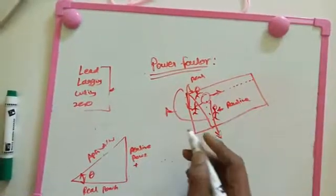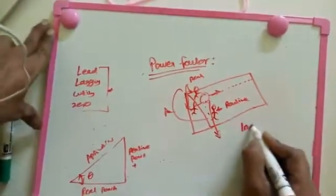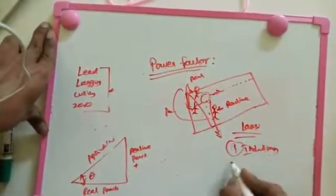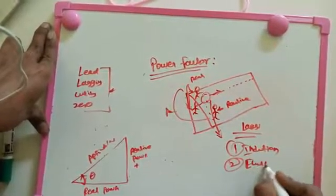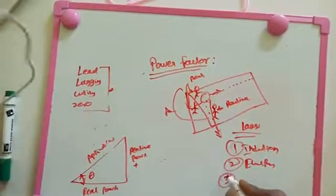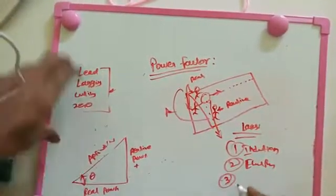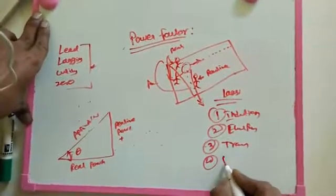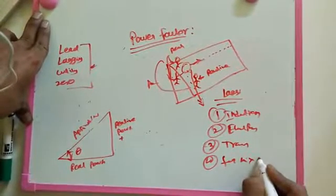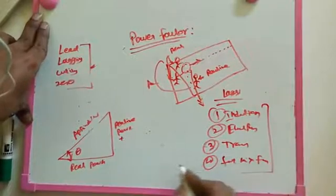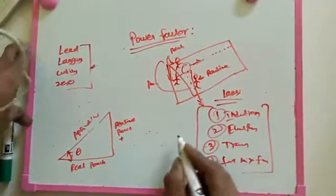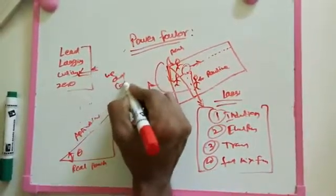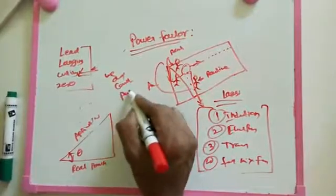Now, what machines have a lagging power factor? First is the induction motor. Second is electrical furnaces. Third is transformers. Fourth is tube lights, mixers, and fans — all these operate with a lagging power factor. To bring the lagging power factor to unity, we add a capacitor bank in parallel to the load.